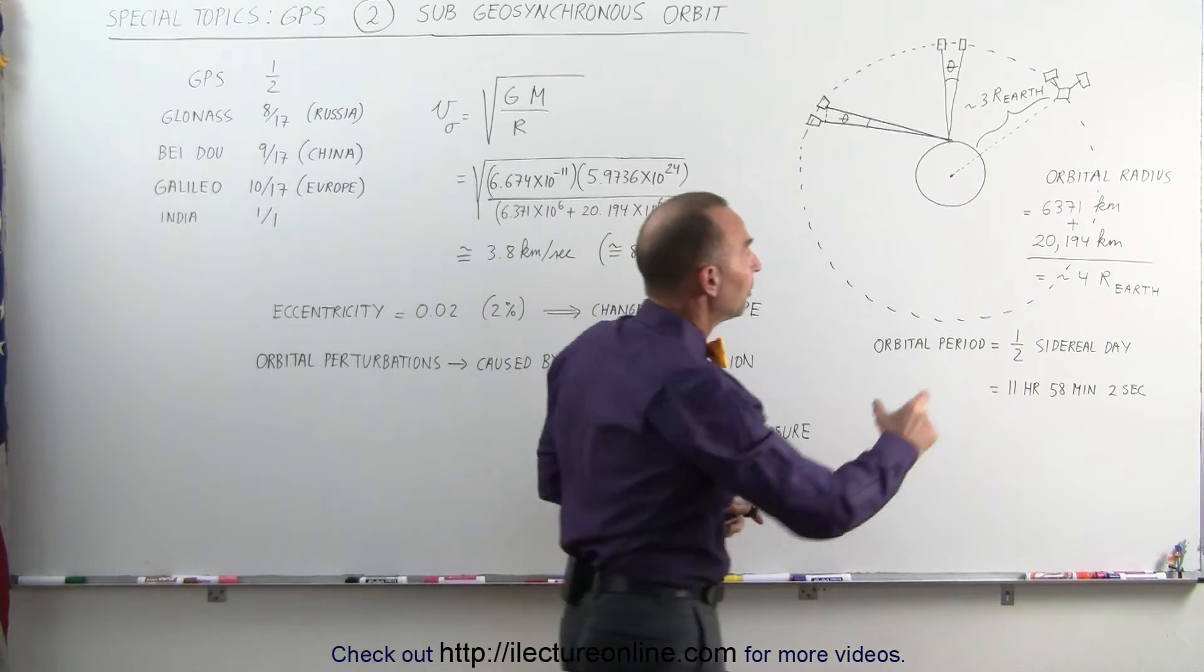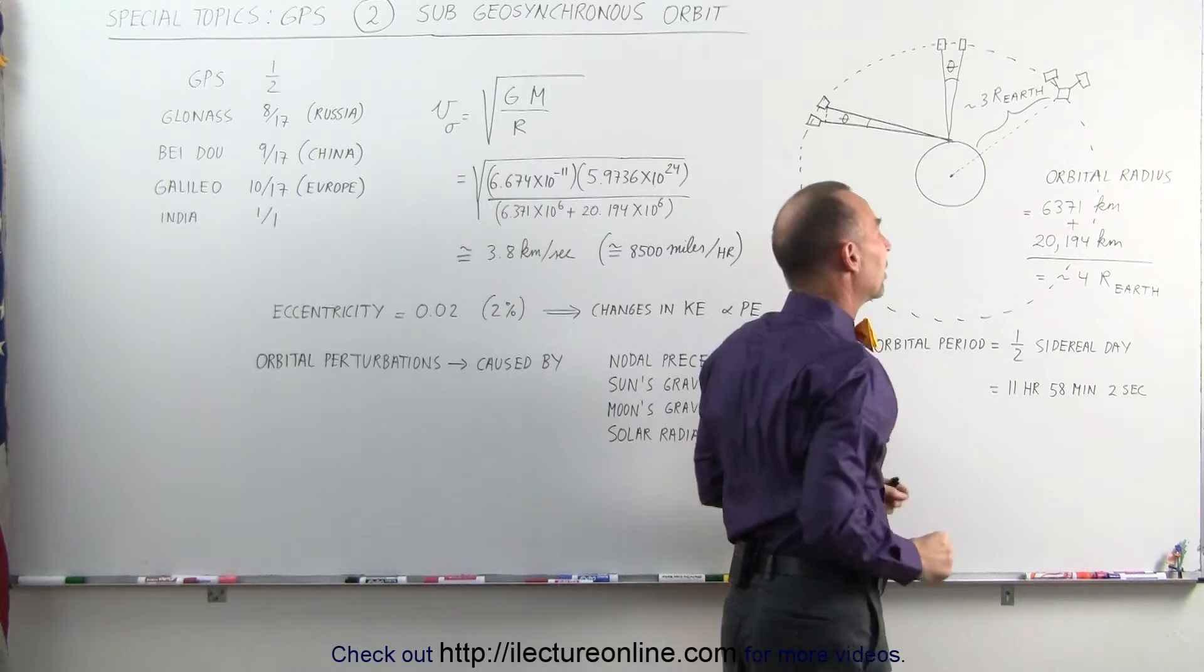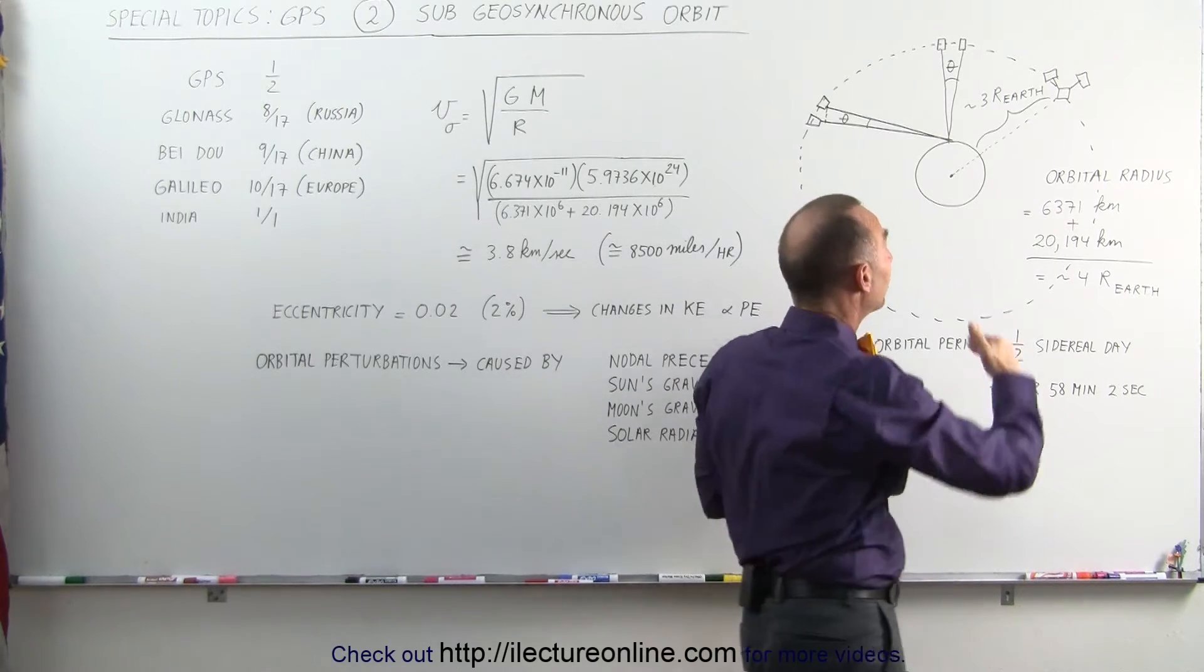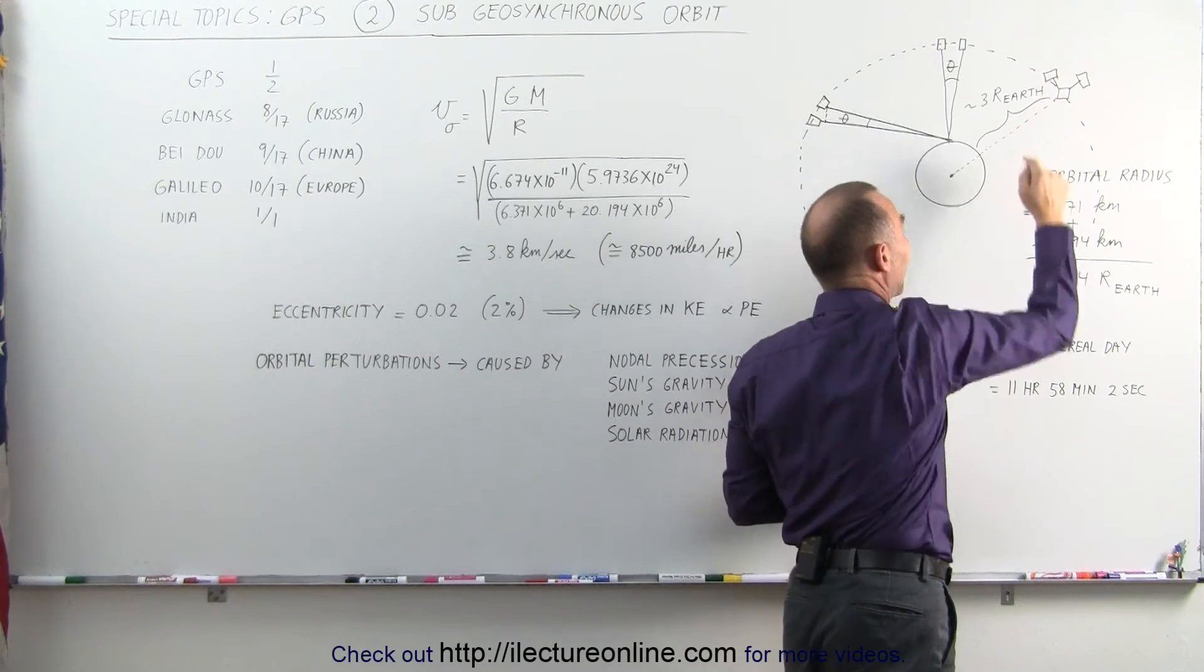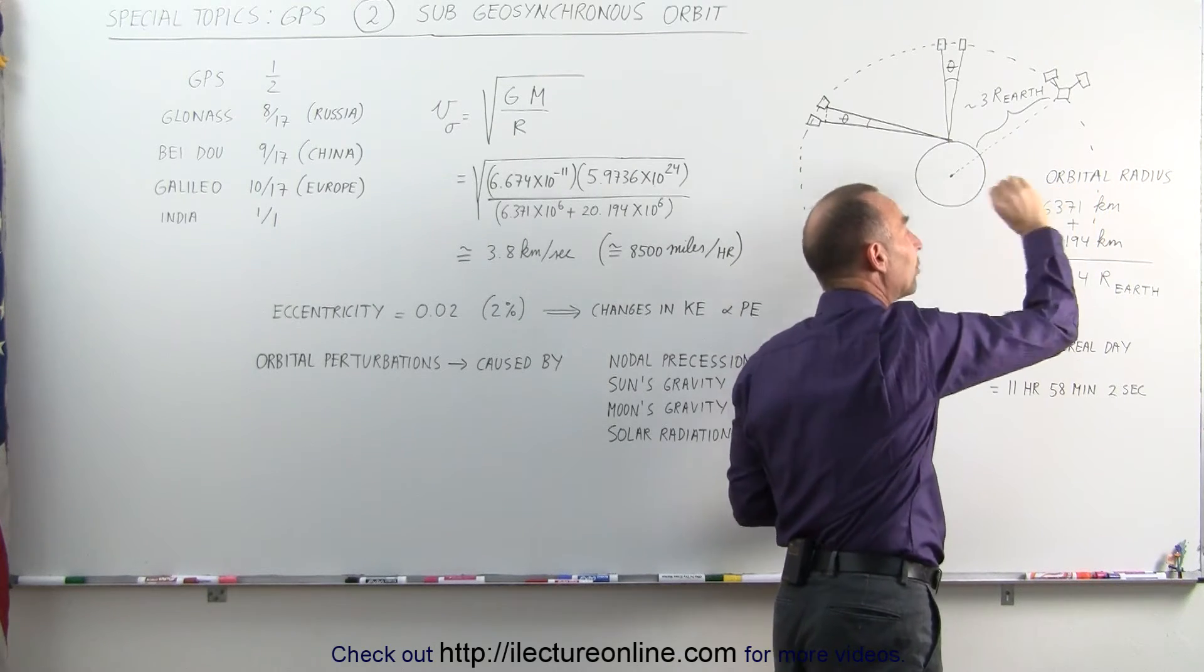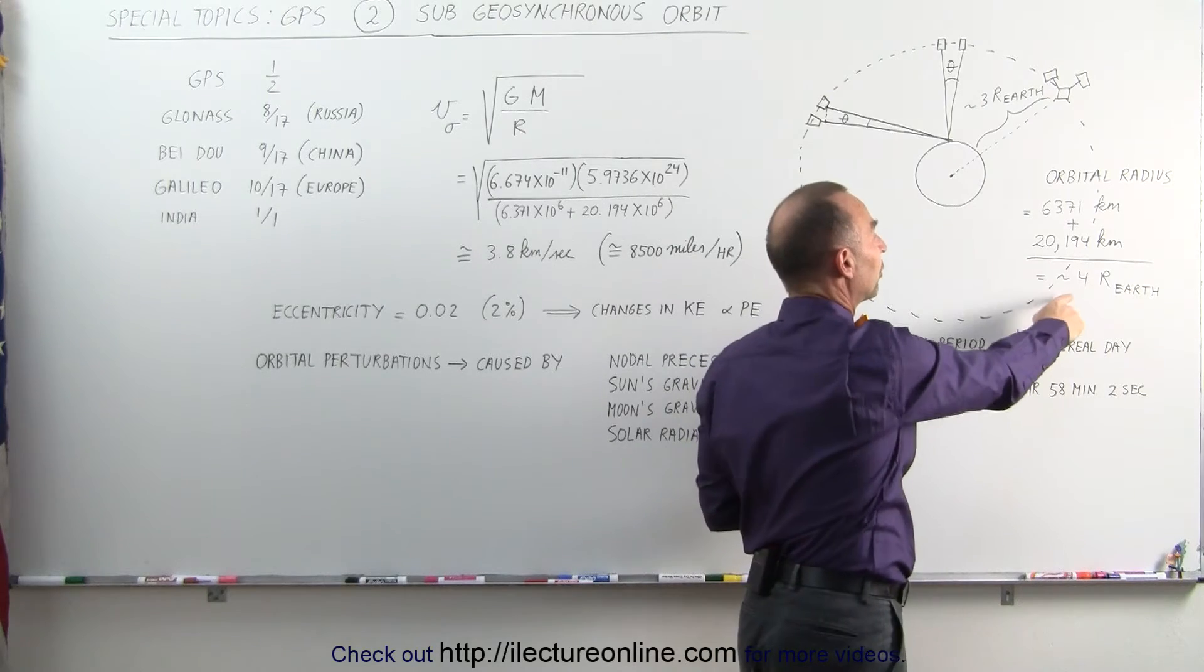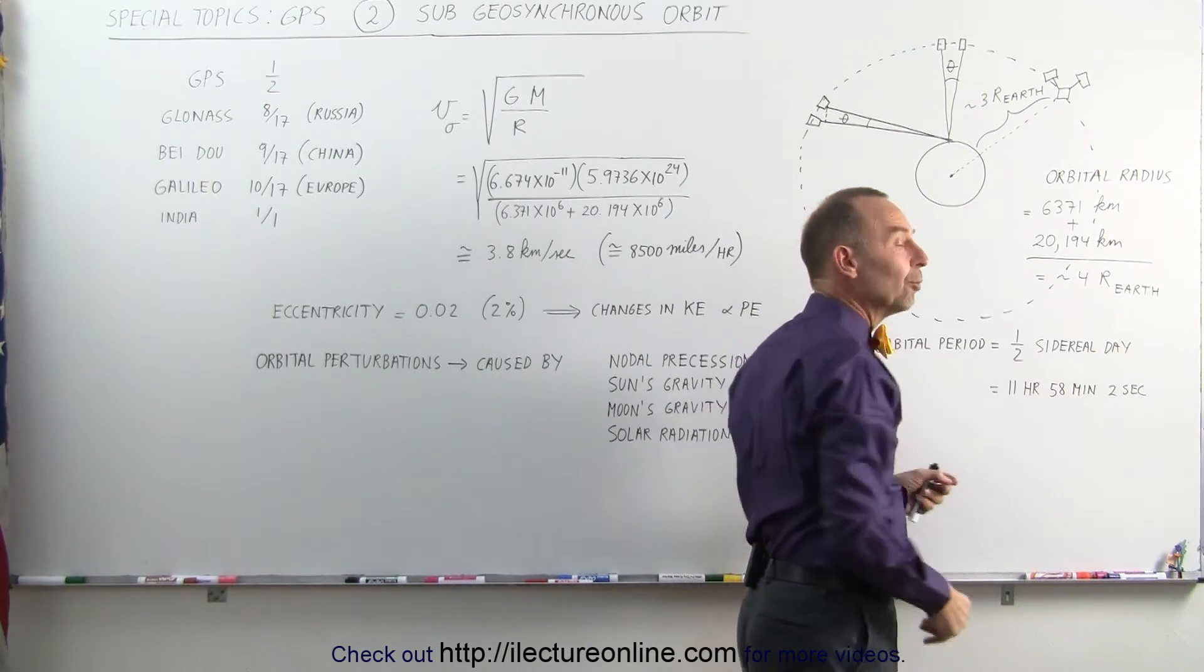If you go back to the radius of the orbit, if the average radius of the Earth is 6,371 kilometers, and the height above the Earth, the average height above the Earth of a satellite, is 20,194 kilometers, when we add those together, that is the average radius of a satellite going around the Earth, which is about four times the radius of the Earth.